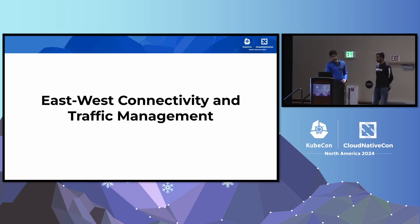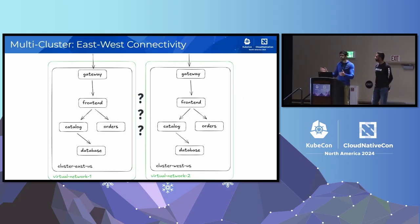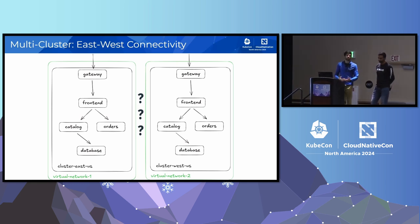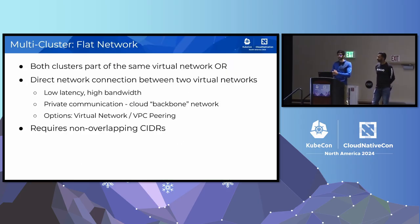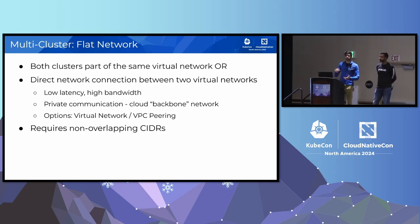Now we need to solve the east-west communication problem. If you have two clusters, how do you enable connectivity to get traffic from one to another — especially if they're in different networks? When we talk about networks here, we're referring to the virtual networks that the VMs of the worker nodes are part of. The first network topology is a flat network: you deploy two clusters into the same network, or use peering to establish direct connectivity, so pods can communicate directly without any gateway or NAT. The core requirement is non-overlapping address spaces.